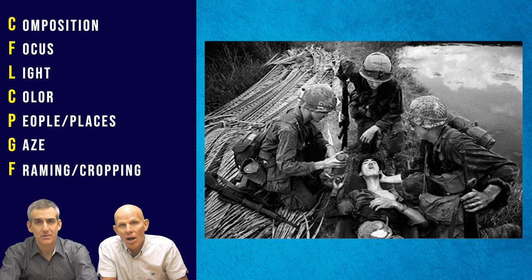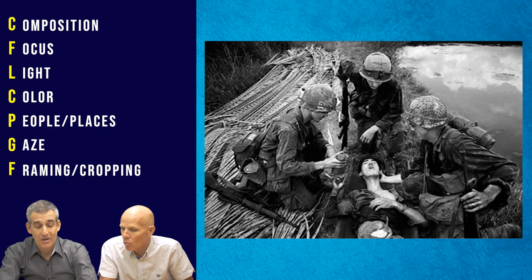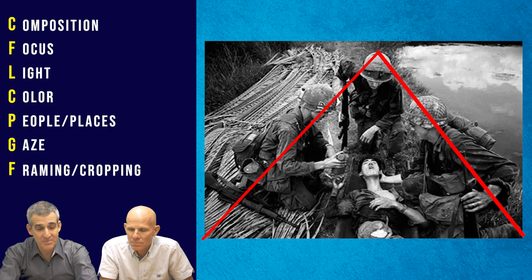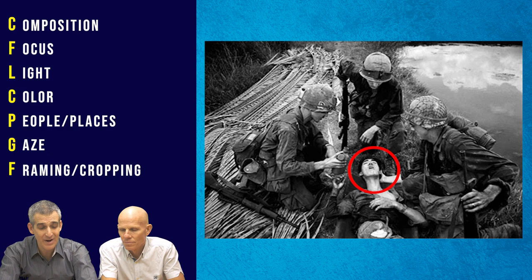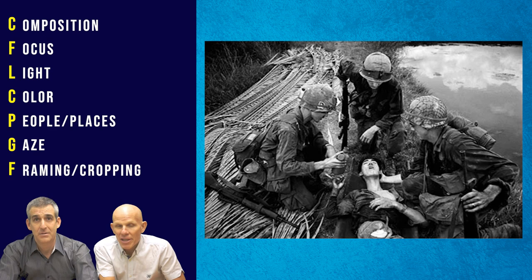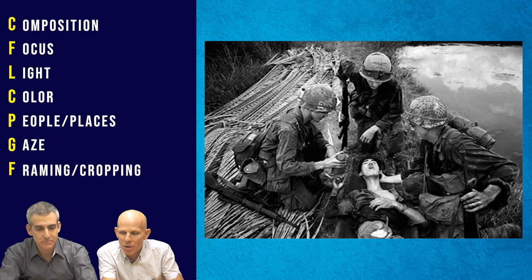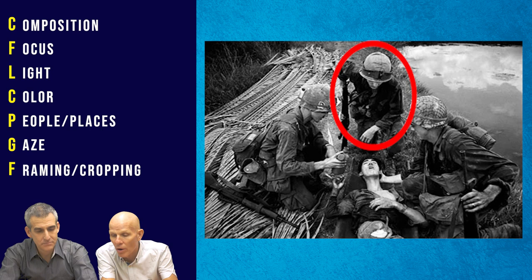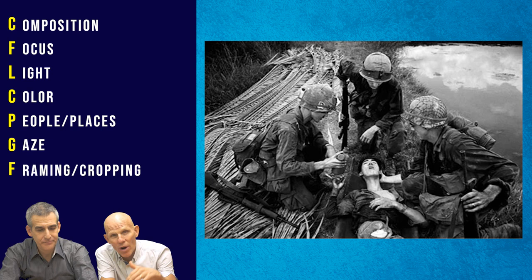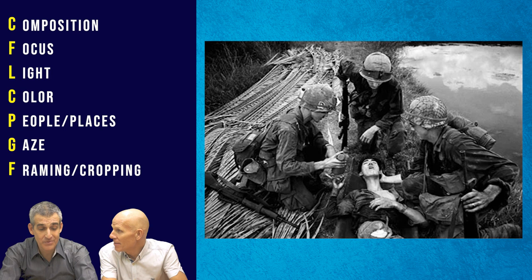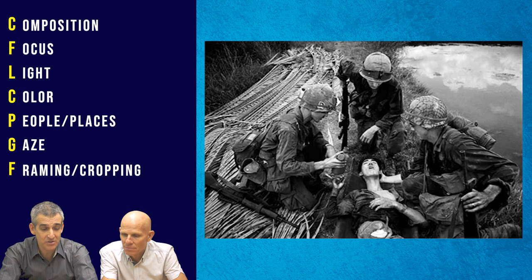Looking at image number one, the first thing I notice is the composition. It's very intentionally framed — almost a triangular position in the middle between the three soldiers. The base of that triangle is where we see a really light part of the frame, and my focal point goes right to the face of this injured Vietnamese man. Thinking about the people, I'm struck by the soldiers' posture — all three are kneeling, caring for this victim of war, cradling his head and giving him water, not holding their guns in any threatening position. Their gaze is directed at the man, which makes us gaze at him too. Sadly, the man is gazing up at the heavens. His eyes are almost closed, his mouth is agape. He's not doing well.